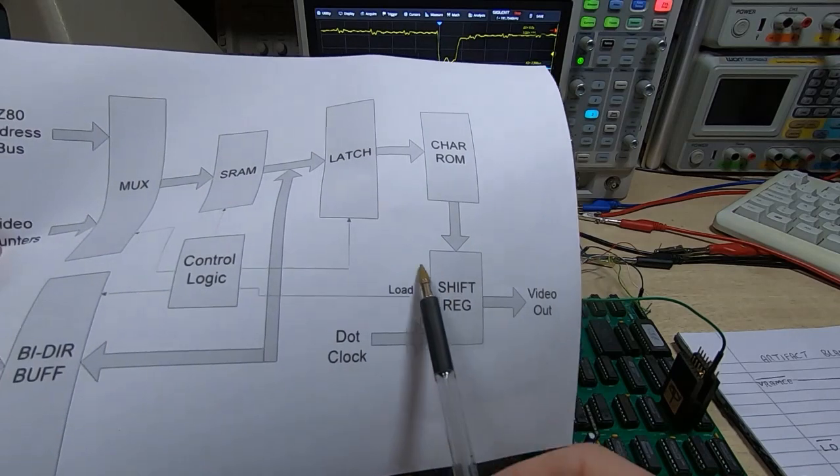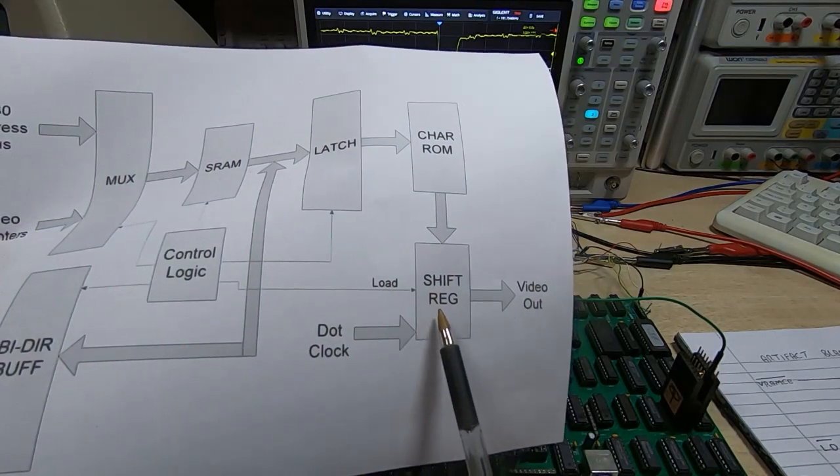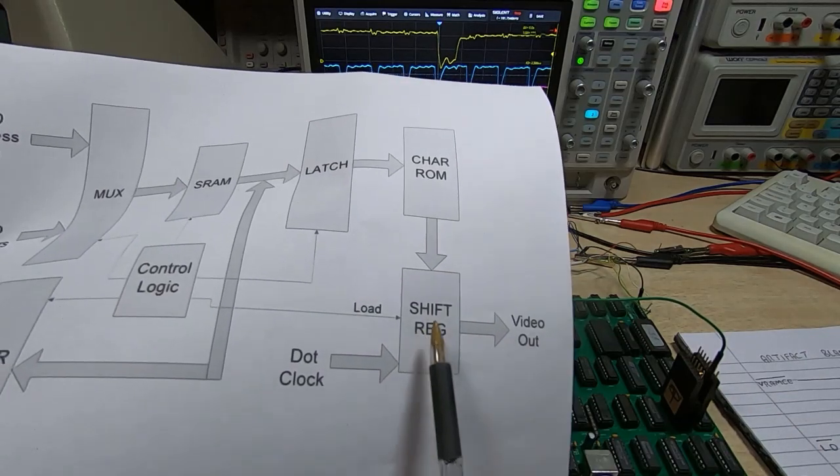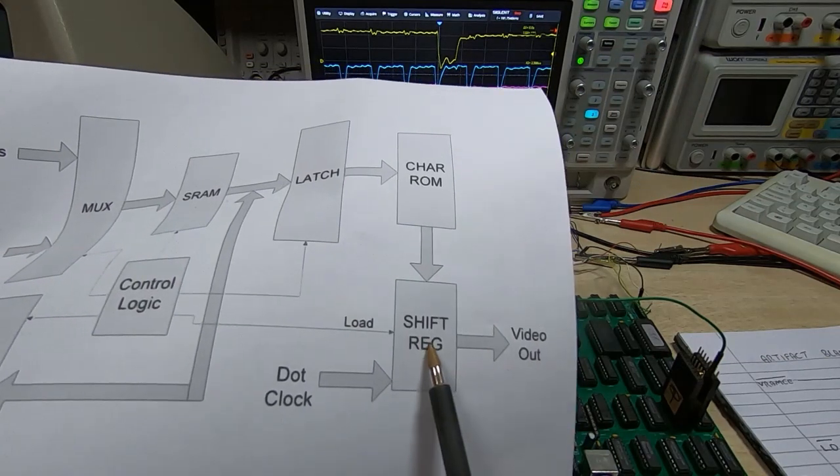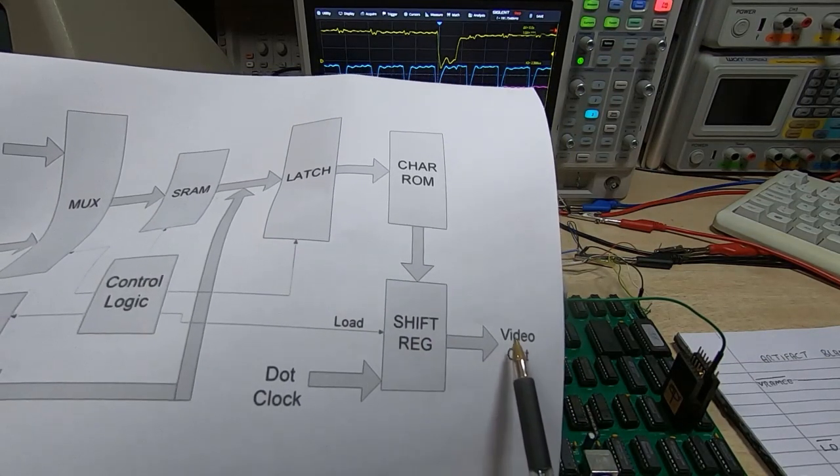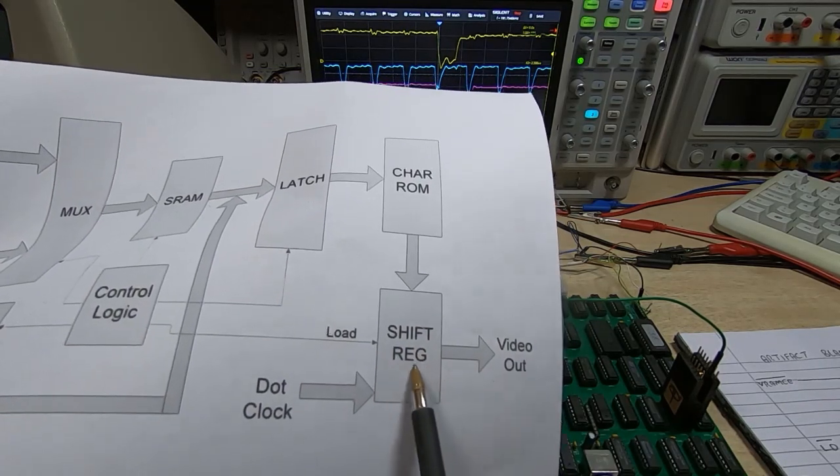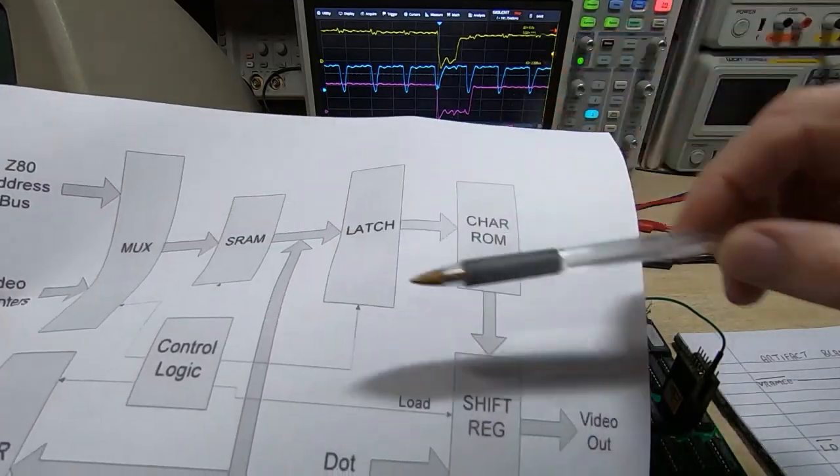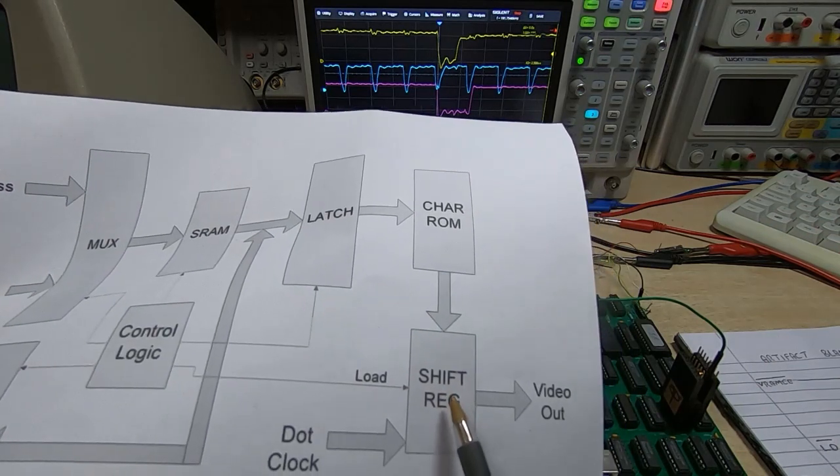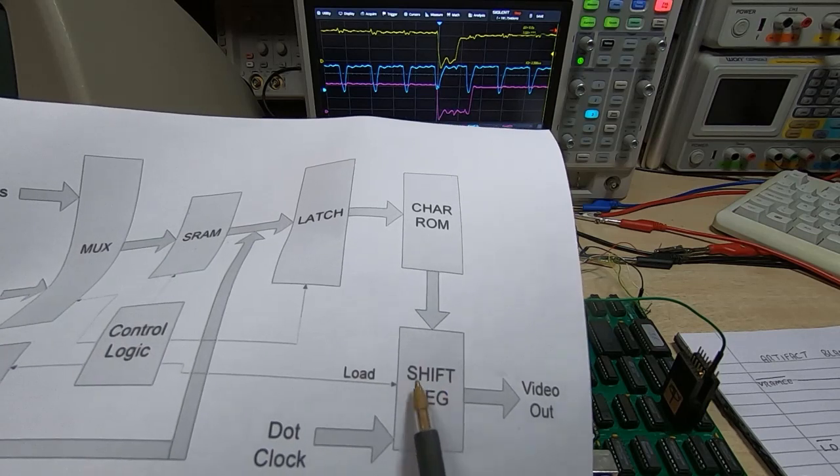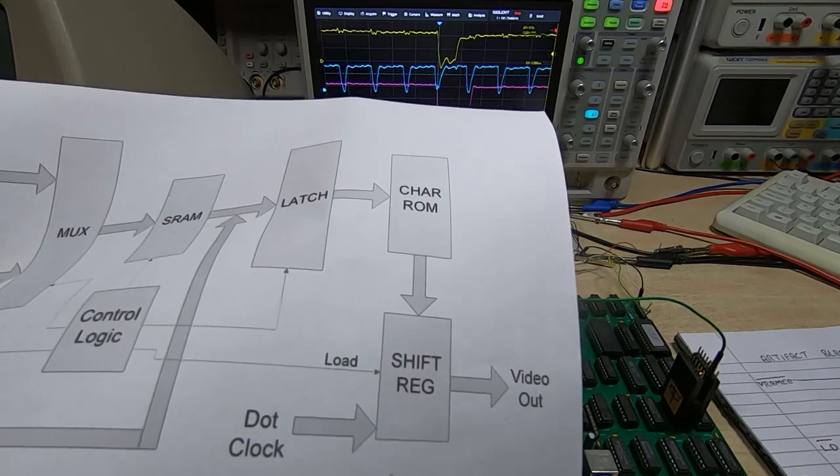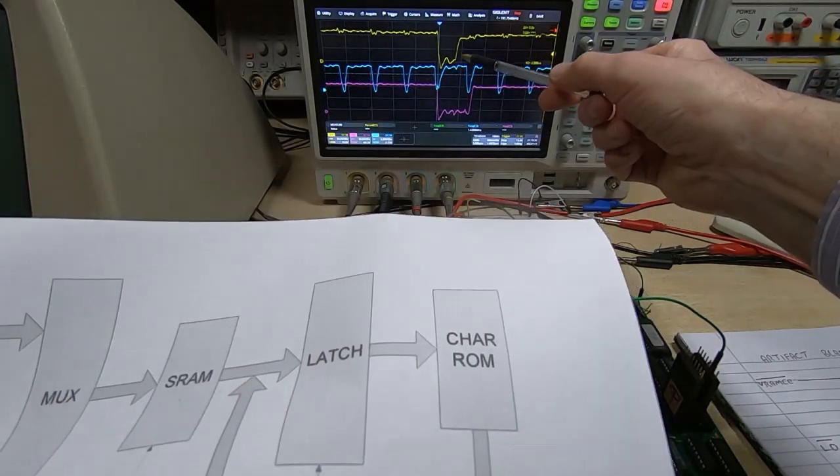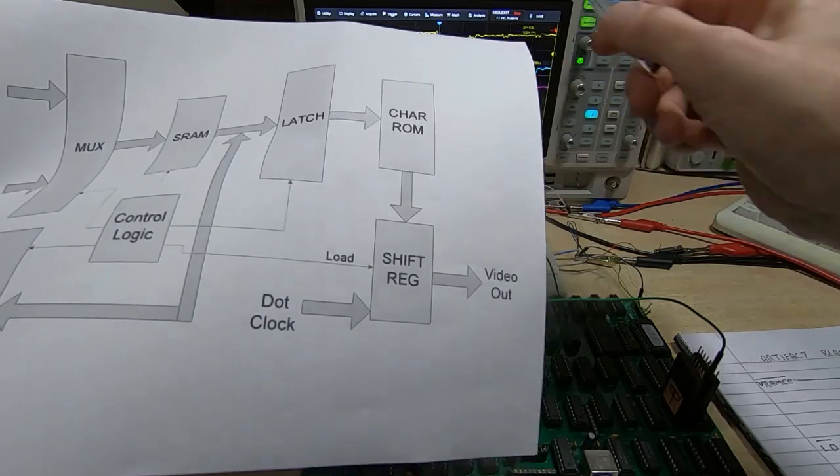This pulse could occur at any time in the shift load cycle of the video output shift register. Let's say it occurred just after the shift register was loaded and then cleared - we'd end up with the wrong value being shifted out. It might blank the first two bits but then the remaining six bits will be shifted out and cause an artifact. Because the two functions are asynchronous, the size of the artifact is going to vary depending on exactly where in this load shift cycle the Z80 decides to access the video RAM.